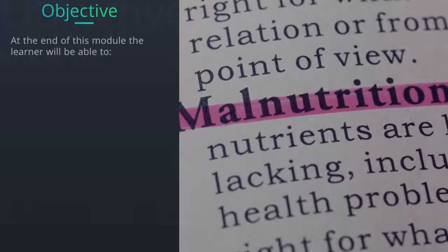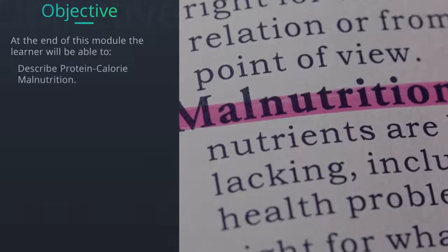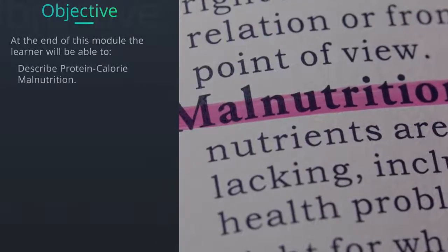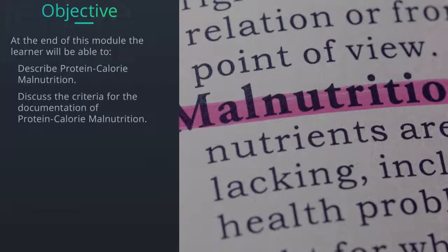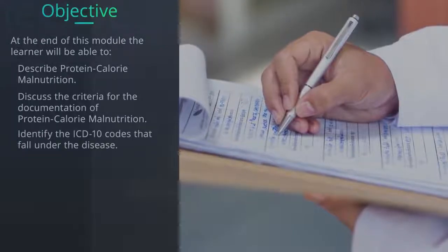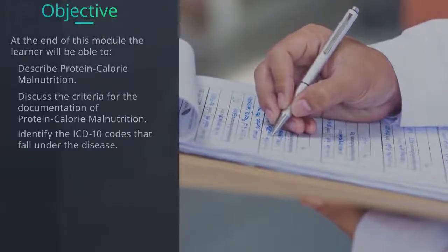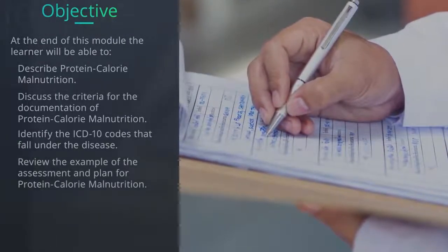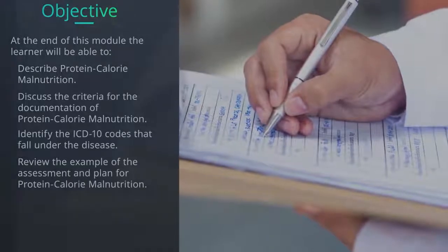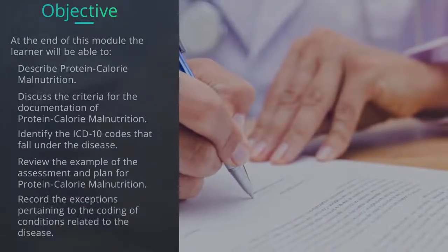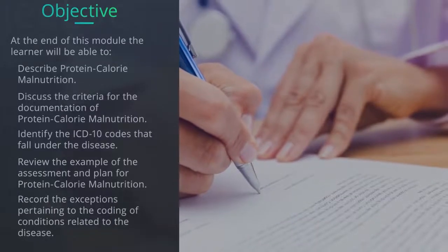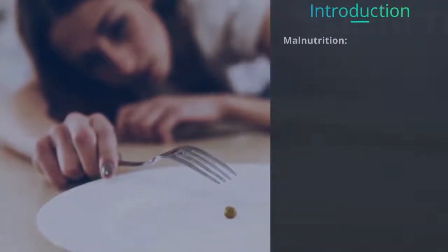At the end of this module, the learner will be able to: describe protein calorie malnutrition, discuss the criteria for its documentation, identify the ICD-10 codes that fall under the disease, review an example of the assessment and plan, and record the exceptions pertaining to the coding of conditions related to the disease.